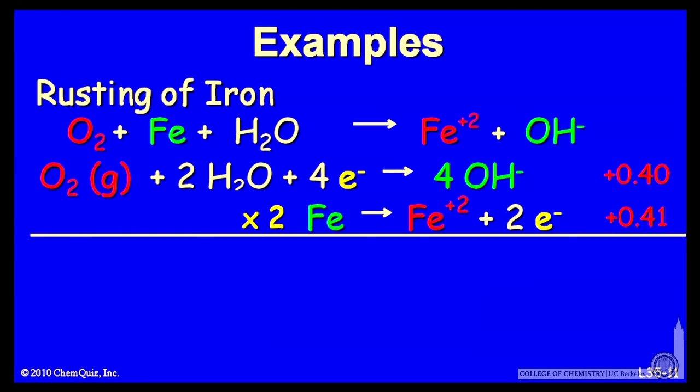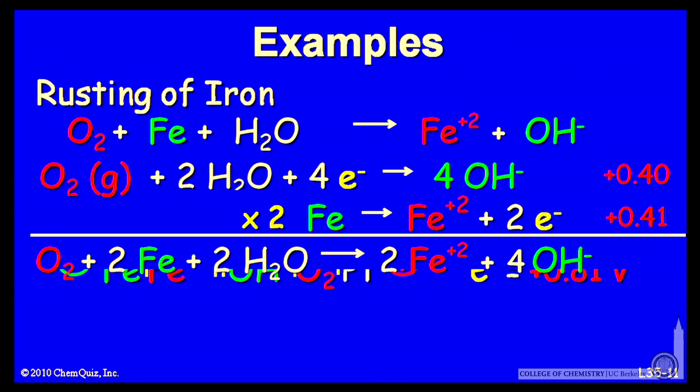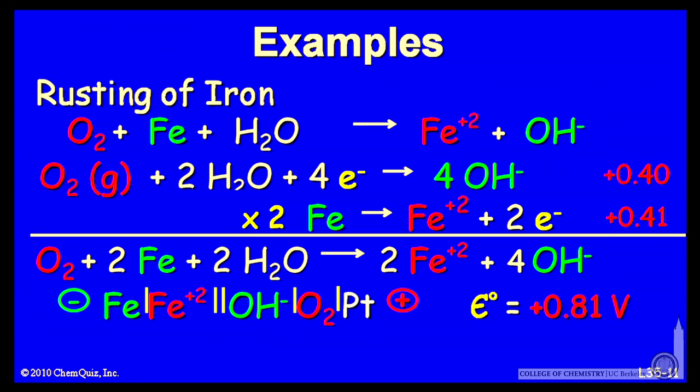Now I can add these two together. The result is the oxygen and iron metal forming the oxidized iron and hydroxide. The overall potential from the sum of the half-cell potentials is 0.81 volts.